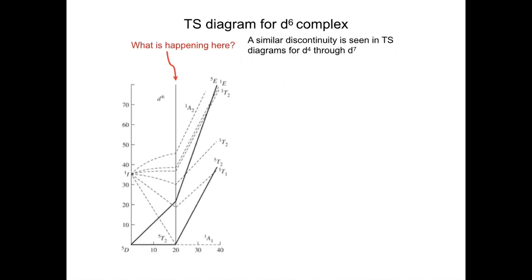If we look at some Tanabe-Sugano diagrams in the back of your textbook or online, a couple things to take note of: in the case of D4 through D7, you actually see a break in the diagram. In this D6 complex we see we start off with the quintet D ground state.